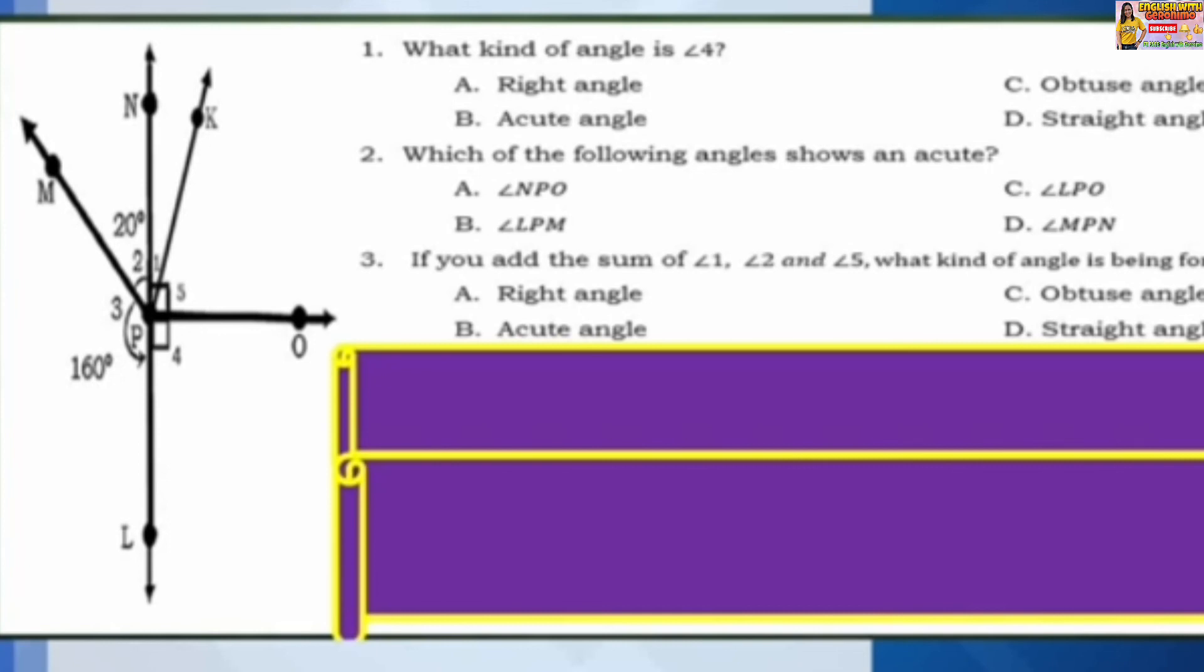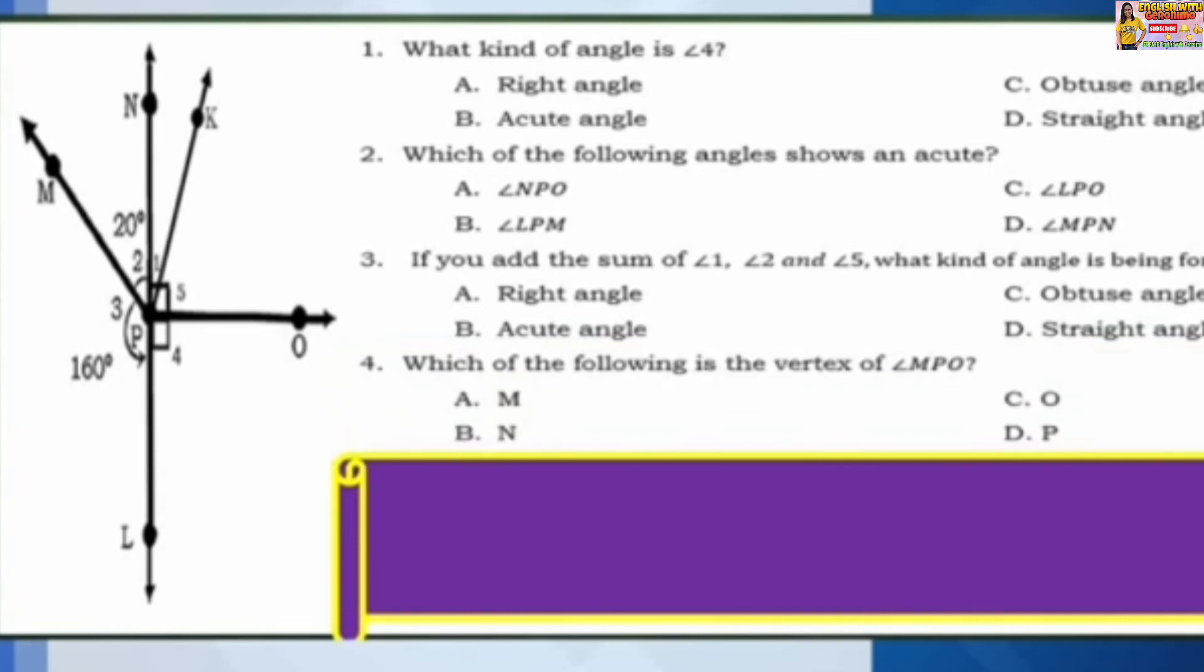Number 4: Which of the following is the vertex of angle NPO? A: M. B: N. C: O. D: P.